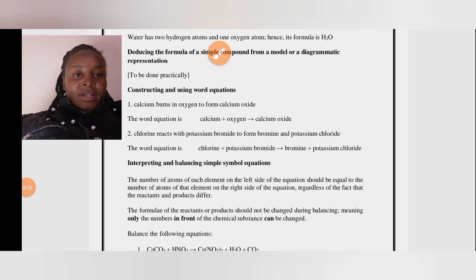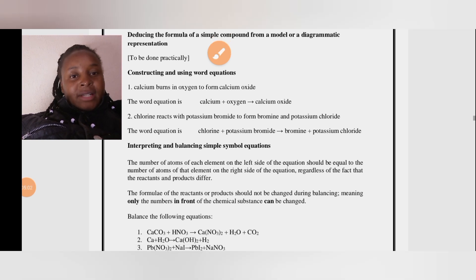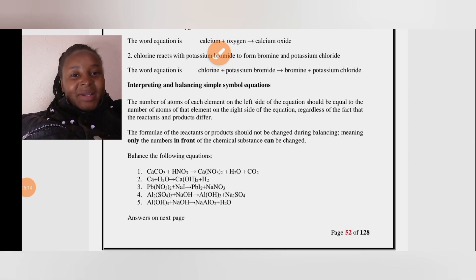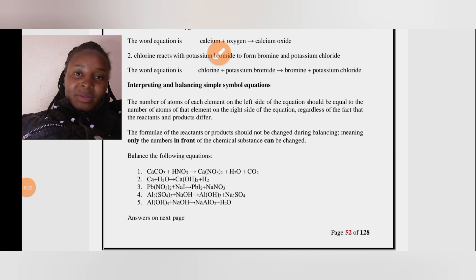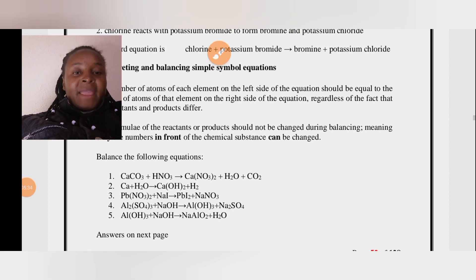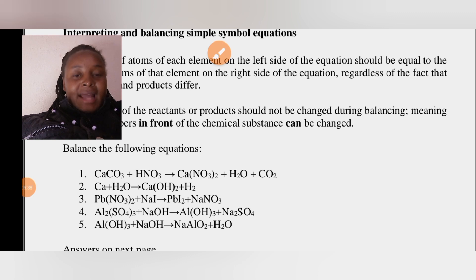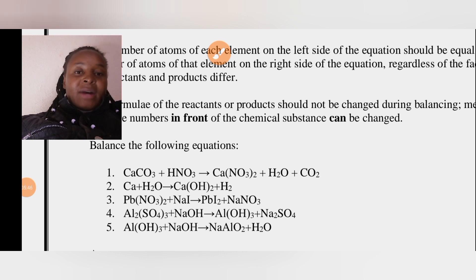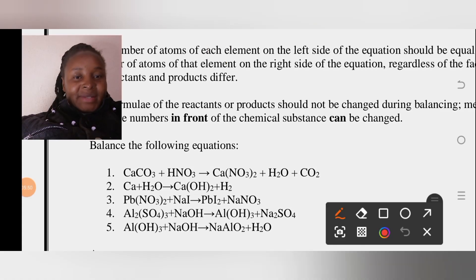Now let's move to balancing simple equations. The number of atoms of each element on the left side must equal the number on the right side. When balancing, we write the balancing number in front of the element or compound, and that number affects every element within that compound. Let's look at the first equation: calcium carbonate + nitric acid → calcium nitrate + water + carbon dioxide.